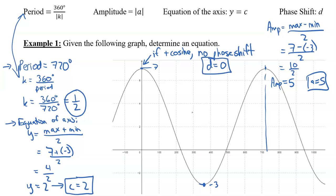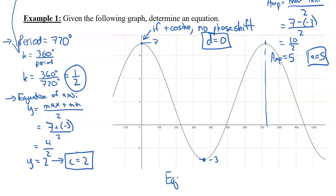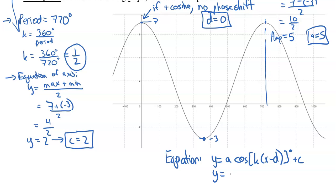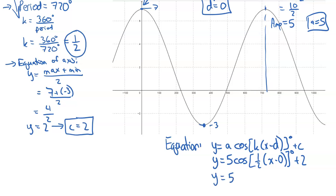And I should have stated this earlier, but the no phase shift meant that the d value was equal to zero. And our equation for this function, the equation is y equals, in general, it's a, and it's going to be a cosine function, we said. So k x minus d degrees plus c. And so we're going to sub these values. A is going to be positive five, k is going to be one half x minus d, x minus zero, so you don't need to do anything there. You just say one half x, and then plus two. So we could simplify this to y equals five cos one half x degrees plus two. That is the equation of that graph.